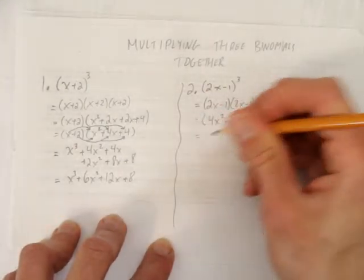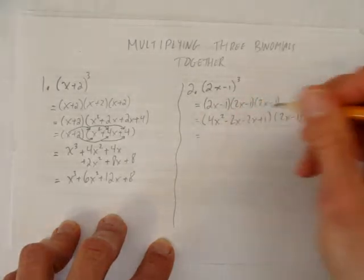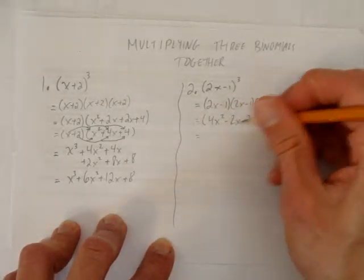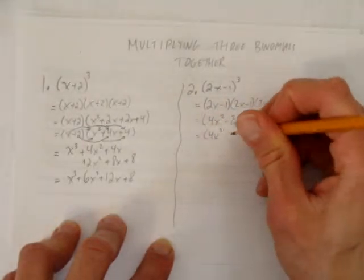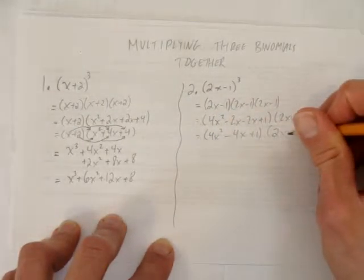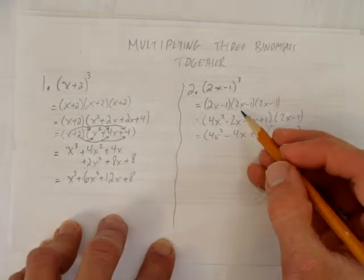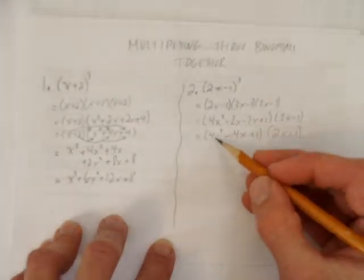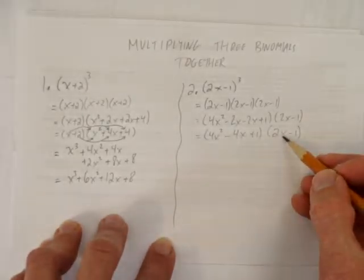Just like last time, before I move on, let's simplify this inside like term pair here. Minus 2x minus 2x is minus 4x. And so, if you chose the first pair to multiply, you'll end up with a trinomial here times a binomial.